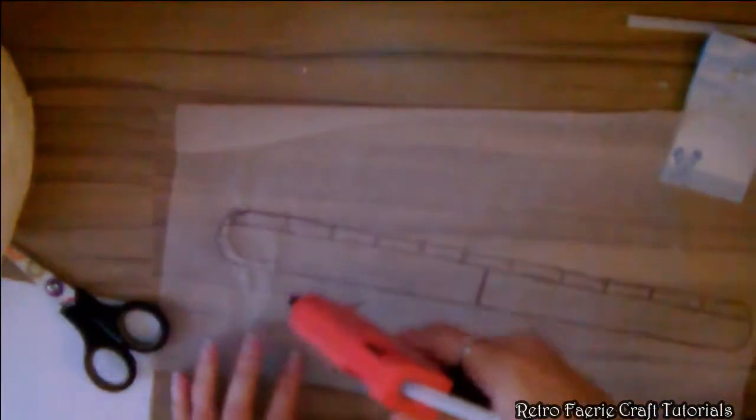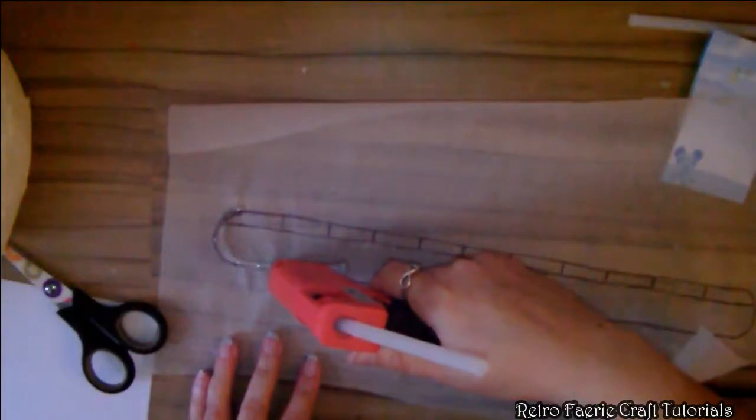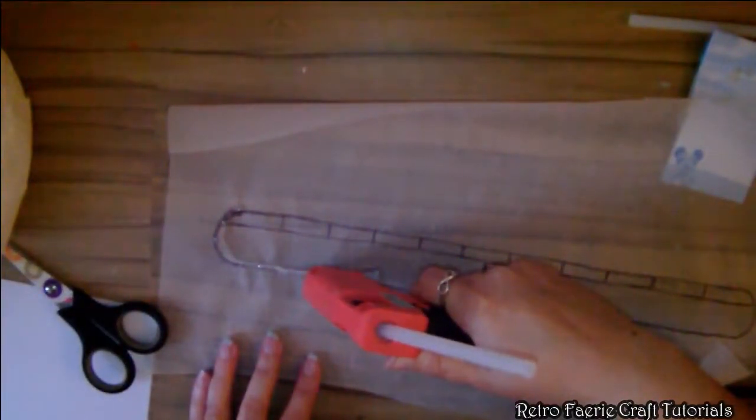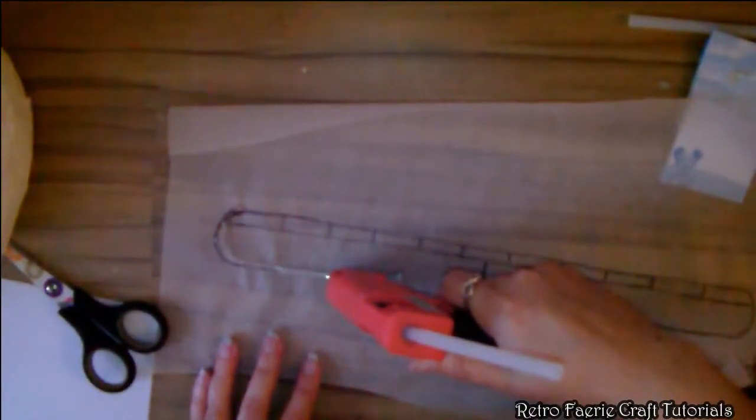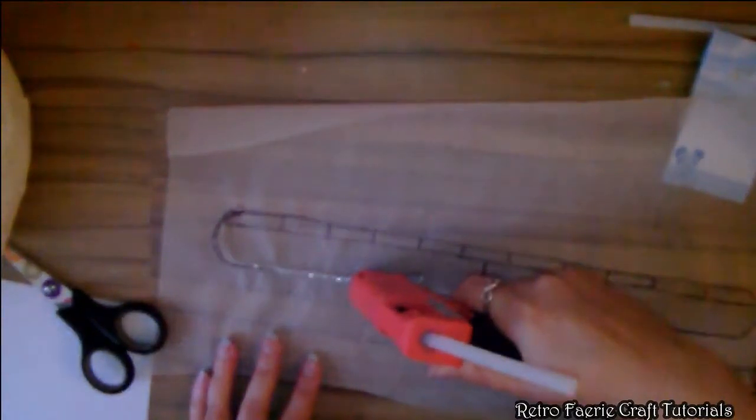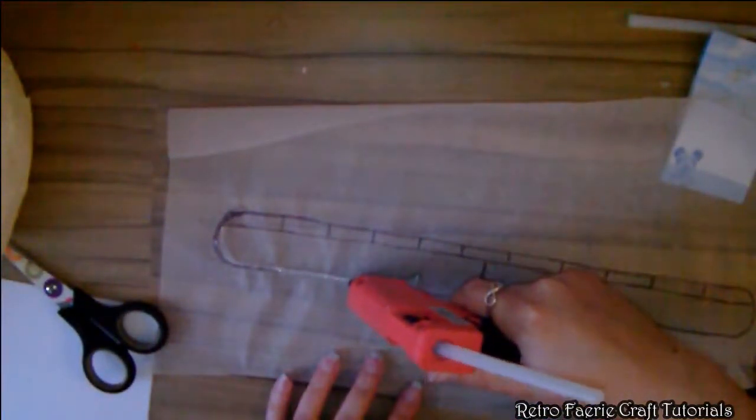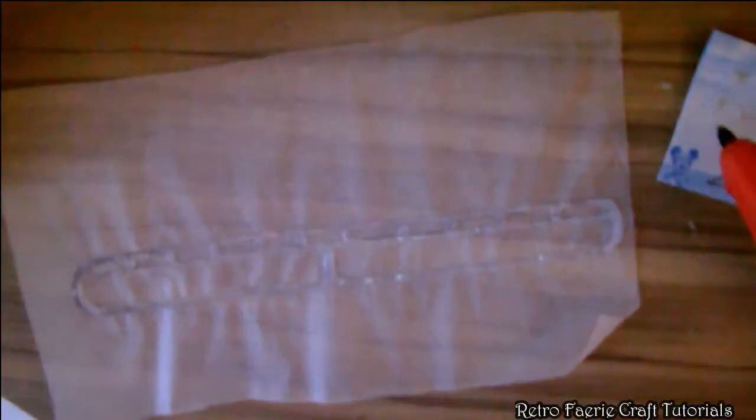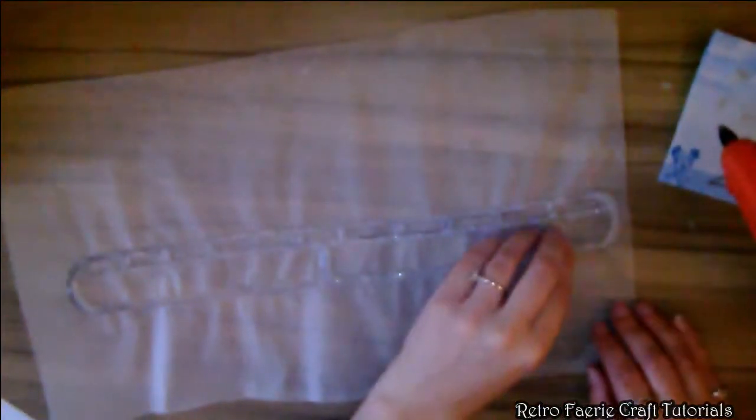Mine were kind of shaky so they came out a bit wobbly, but if you take your time you can get a nice straight line. Then just leave that to dry, it literally takes a few seconds, not long at all. When that's dry it literally just peels off the paper.